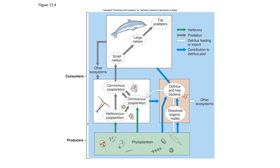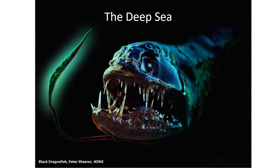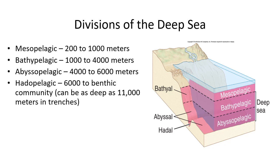Now we're moving to the deep sea, which is scary and has a lot of unique organisms. In fact, we know more about space in a lot of ways than we do about the deep sea. Divisions of the deep sea include the mesopelagic, bathypelagic, and abyssopelagic, each with their benthic counterparts. Under the epipelagic, mesopelagic goes to 1,000 meters, bathypelagic from 1,000 to 4,000, and abyssopelagic from 4,000 to 6,000. Below 6,000 meters in a trench would be hadopelagic, generally only under active margins.